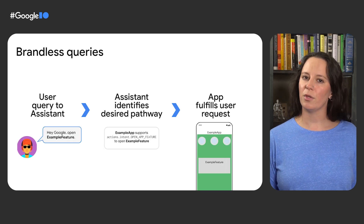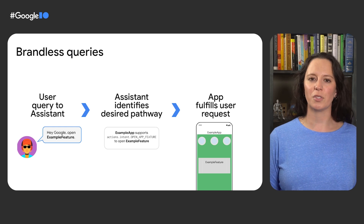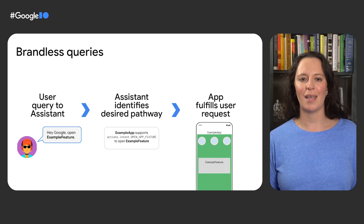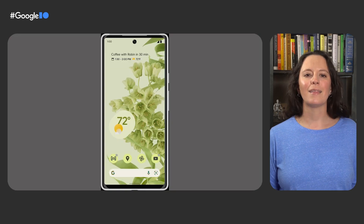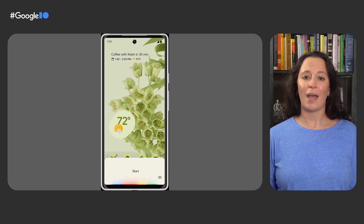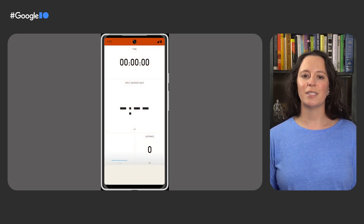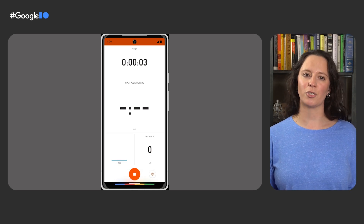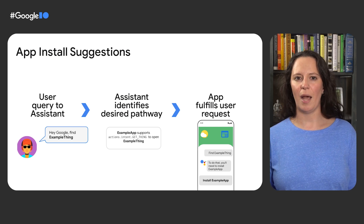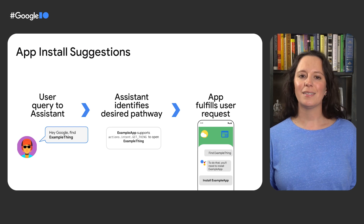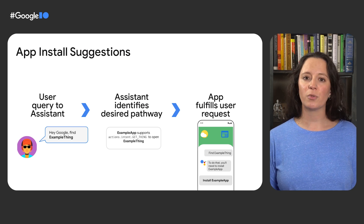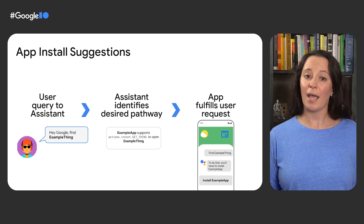When a user queries Assistant without using a specific app's brand name — also known as a brandless query — Assistant can now infer what app would best fulfill the user request and effectively route the user to that app. Let's see an example with Strava: if a user attempts to start logging their run without identifying Strava by name, Assistant will still identify the desired functionality and launch Strava to begin tracking a run. If a user triggers the proper Assistant query for the functionality of your app, even if the app isn't installed yet, Assistant can provide app install suggestions and automatically direct users to your Play Store listing.